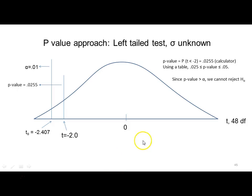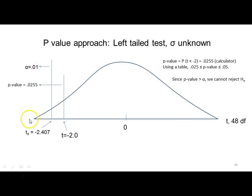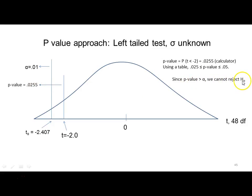Looking at it graphically, we go to our T distribution with 48 degrees of freedom. The P-value approach compares two probabilities: the probability below negative 2.407 is 0.01 (alpha), and then we take our calculated T of negative 2 and find the area below it, which using a calculator is 0.0255. Since the P-value was bigger than alpha, we cannot reject the null hypothesis.